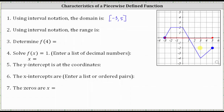Next, we're asked to determine the range using interval notation, where the range is the set of all possible outputs or y values. To find the range, we analyze the graph vertically. Notice how the lowest point on the graph is where y is equal to negative four, and the point on the graph is closed, and therefore y equals negative four is in the range.